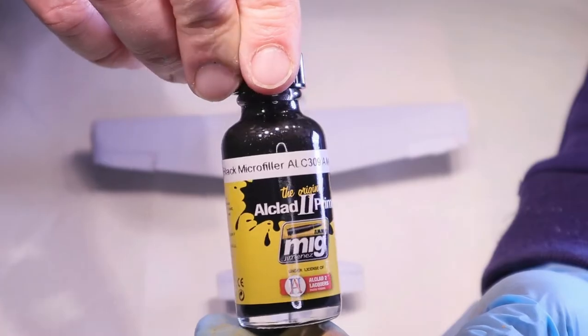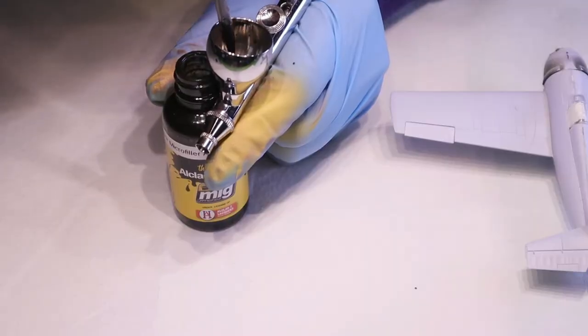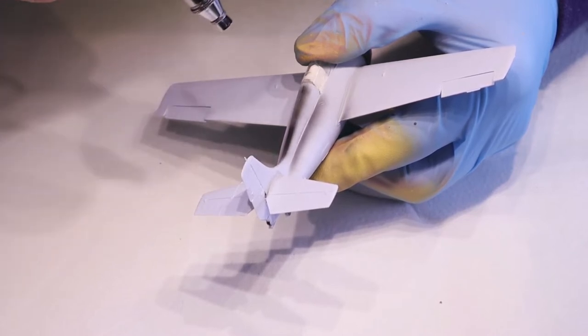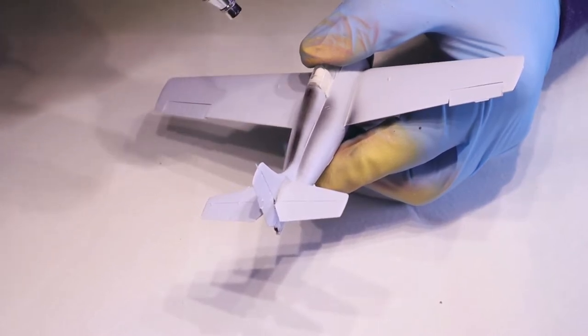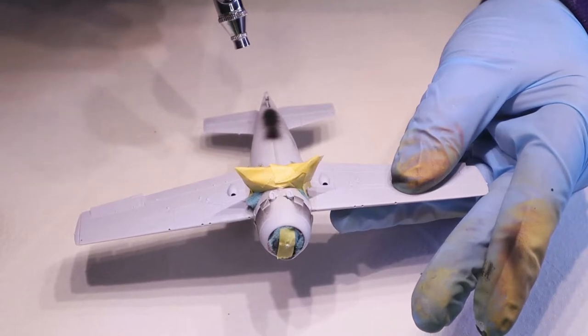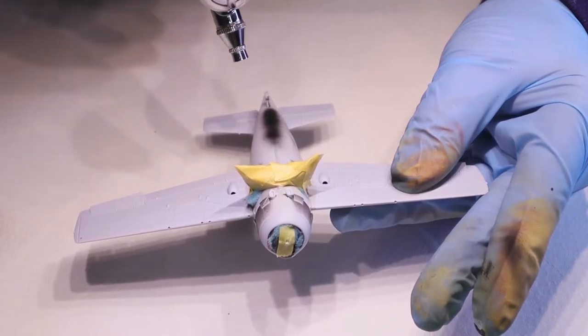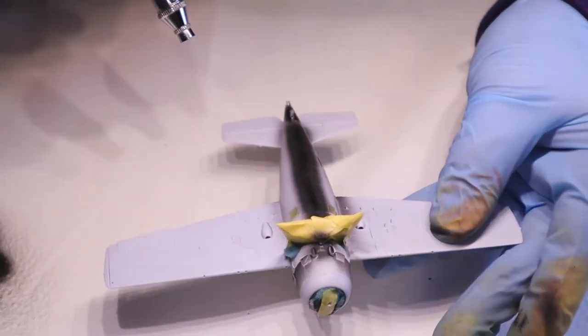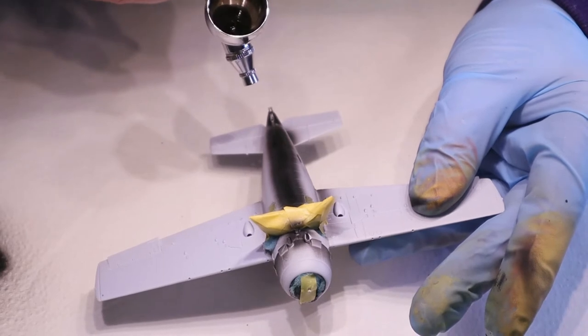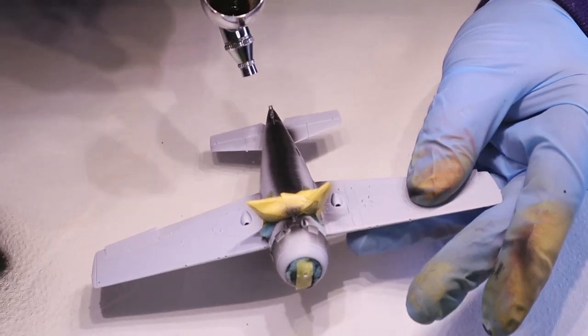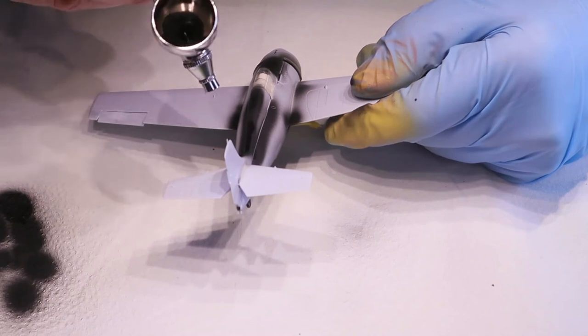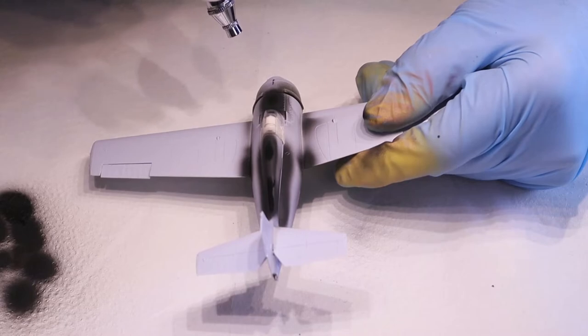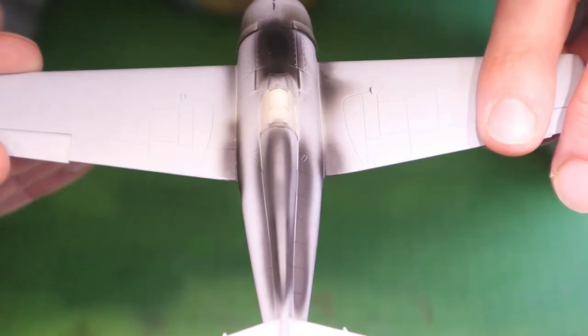Okay, now here's the microfiller trick. You use the Alclad microfiller and spray it over the seam lines. Spray it over where you have a bigger seam line, but not that big that you can fill it with the plastic putty or something. You have to spray over a few coats, like two, three, four coats, maybe depending on how big is your seam line.